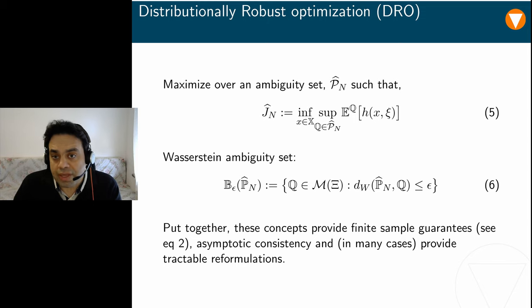Secondly, for several loss functions of practical interest, the DRO problem is computationally tractable and admits an exact reformulation similar to the sample average approximation counterpart. Now, I will hand the lecture over to my co-author Daniel Kuhn to introduce you to the convex reduction results of this paper.